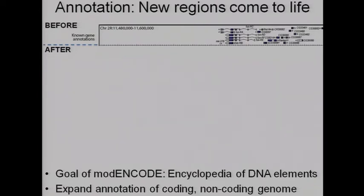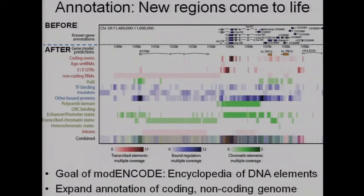For example, in this region we have several protein coding and non-coding transcripts on the right and a large unannotated region on the left. The moment you overlap modENCODE data sets on it, you see increased coverage of these coding regions with many small RNAs and non-coding RNAs lighting up. You can also see vast regions of bound proteins happening in the middle of genes in regulatory elements, as well as in the middle of this large intergenic region, which now has a new gene model with many different regulatory elements annotated by modENCODE.